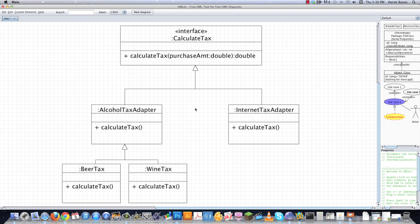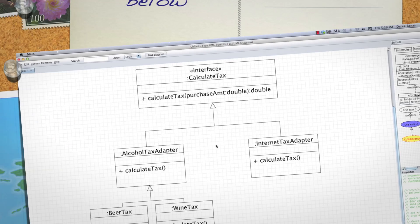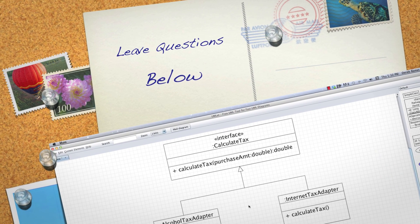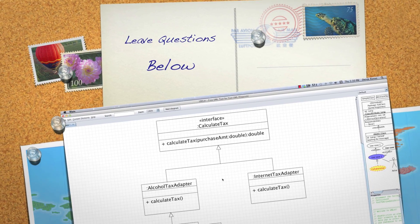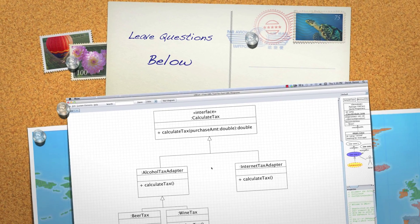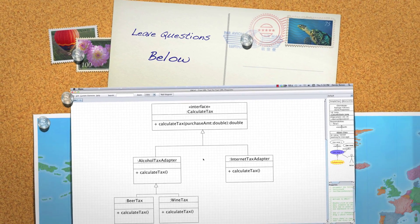This is technically the end of the object-oriented design tutorial. However, I'm going to be getting into code refactoring, which I thought deserved its own tutorial. As soon as I have it done, there will be a link to it above. If you have any questions about anything you saw in this tutorial, please leave questions or comments below. Till next time.